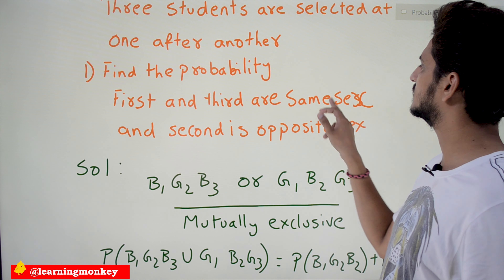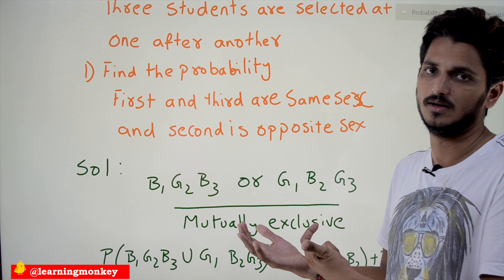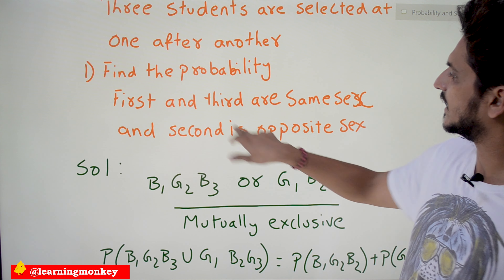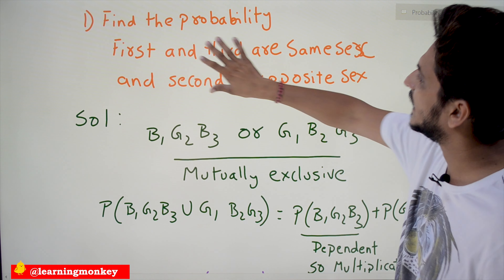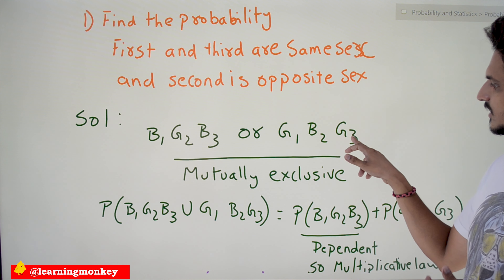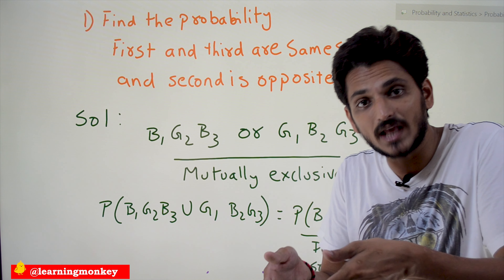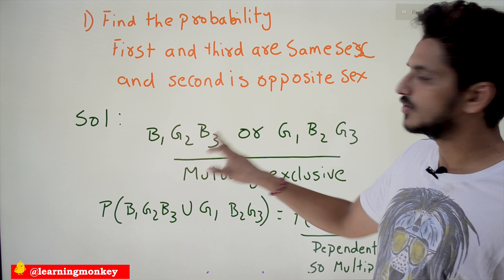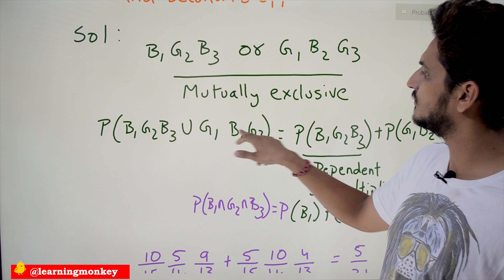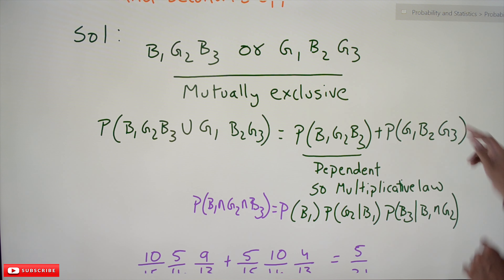Find the probability that the first and third are the same sex and the second is the opposite sex. If first is a boy, third should be a boy and second should be a girl; if first is a girl, third should be a girl and second should be a boy. These two possibilities are mutually exclusive events — they cannot happen at the same time. So we write: P(B1G2B3 ∪ G1B2G3) = P(B1G2B3) + P(G1B2G3).